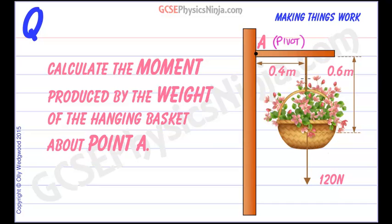And that's the line of action of the force. We know that the turning effect of that force can be found by multiplying the force by the perpendicular distance from the pivot to the line of action of the force. In this case that's 0.4 meters.